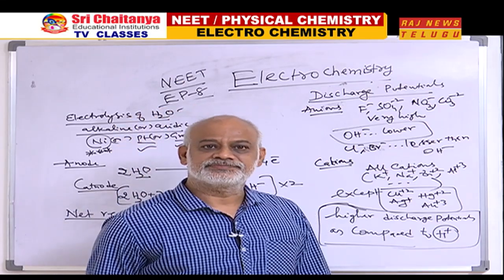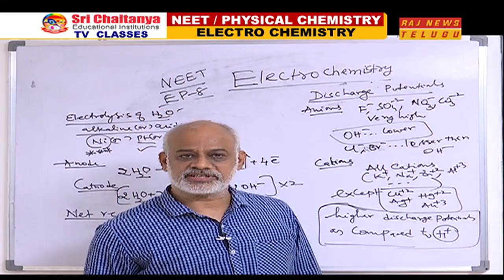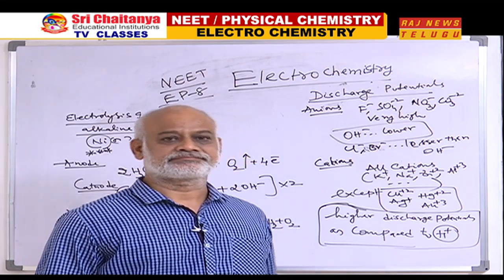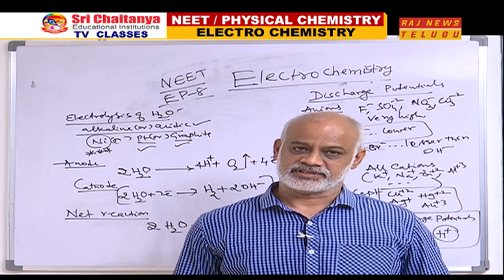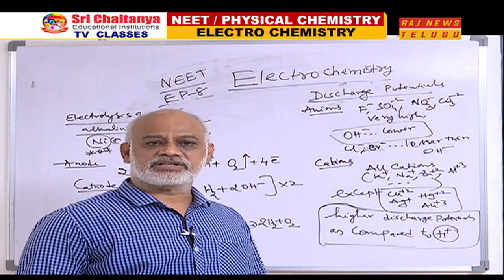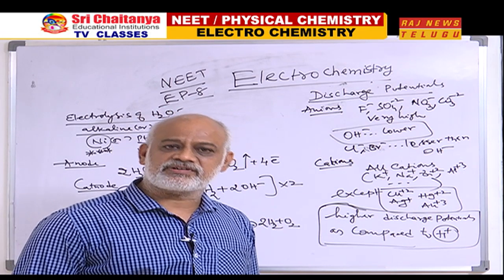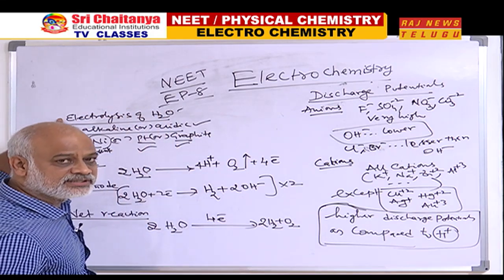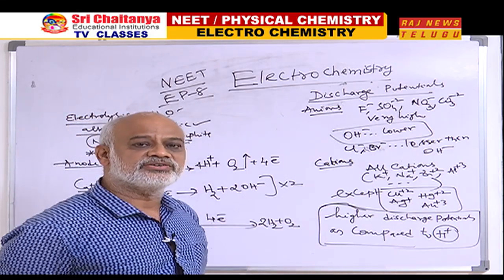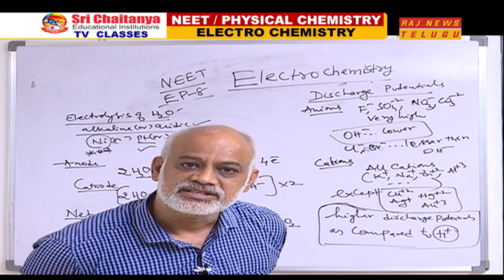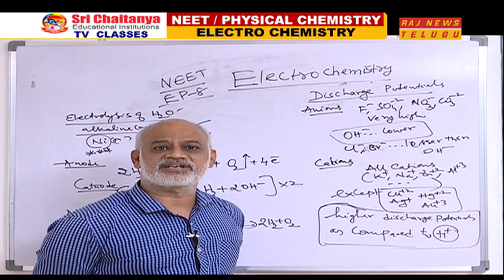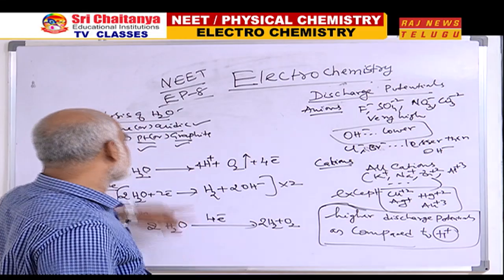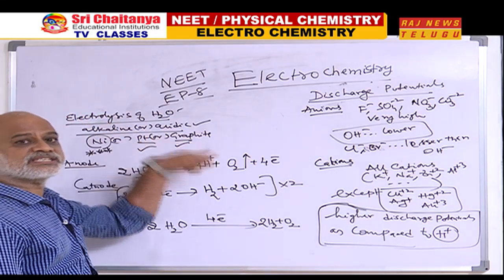Hi students, back with electrochemistry episode 8, continuing with electrolysis. The most important electrolysis that every one of us has to understand is electrolysis of water. As I already told you, water is a weak electrolyte. Since water is a weak electrolyte, to ionize water it is very, very difficult. To make it a better electrolyte, a few drops of acid or base is added.